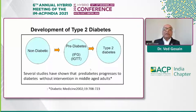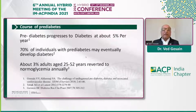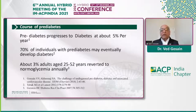If you look at the progression of non-diabetic individuals: people without diabetes who have genetic predisposition and environmental factors may develop diabetes, but they go through this phase of pre-diabetes consisting of impaired fasting glucose or impaired glucose tolerance. If we don't intervene, they're going to progress to diabetes. The rate of progression is approximately 5% per year, and 70% of individuals will eventually develop diabetes. About 3% of adults will revert to normal glycemia annually.